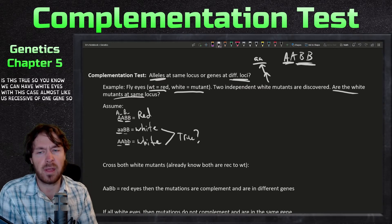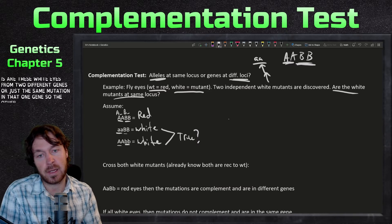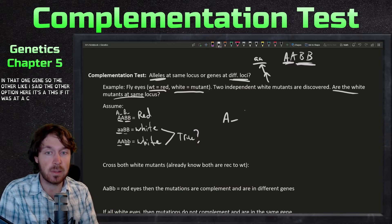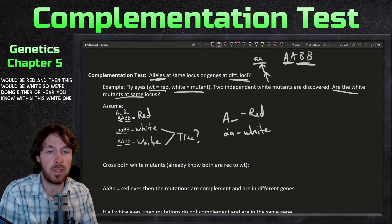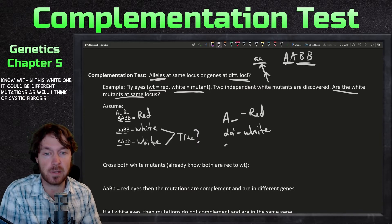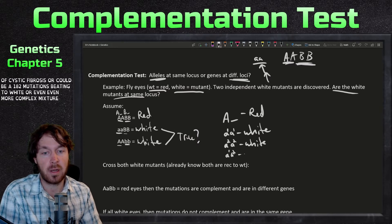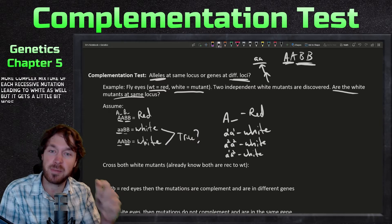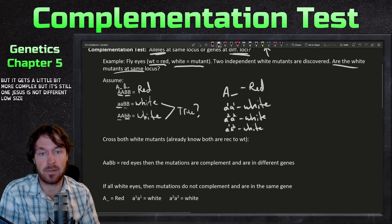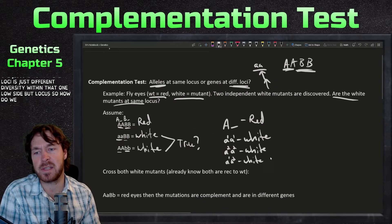The question is whether those white eyes come from two different genes or the same mutation in one gene. At a single locus, red would be the result with dominant alleles and white with recessive. Think of cystic fibrosis — there could be different mutations (a1, a2) at the same locus both leading to white, but it's still one gene, just diversity within that locus.